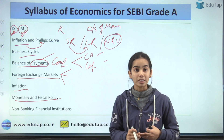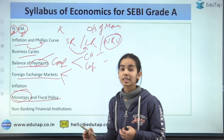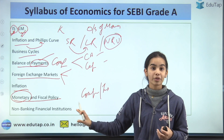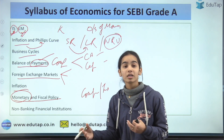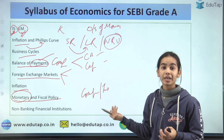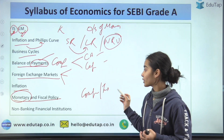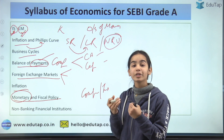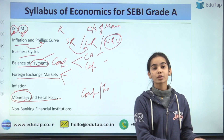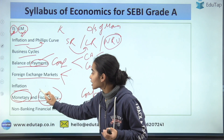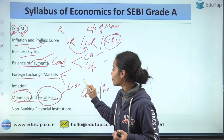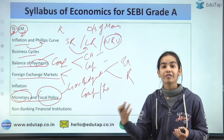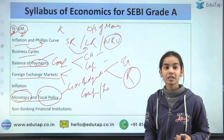Then monetary and fiscal policy. For monetary policy under the RBI, study the instruments: CRR, SLR, reserve ratio, repo rate, and reverse repo rate — and how the RBI uses these instruments to control inflation or boost the economy. For fiscal policy, study the government budget and its components: capital expenditure, revenue expenditure, revenue receipts, and capital receipts.